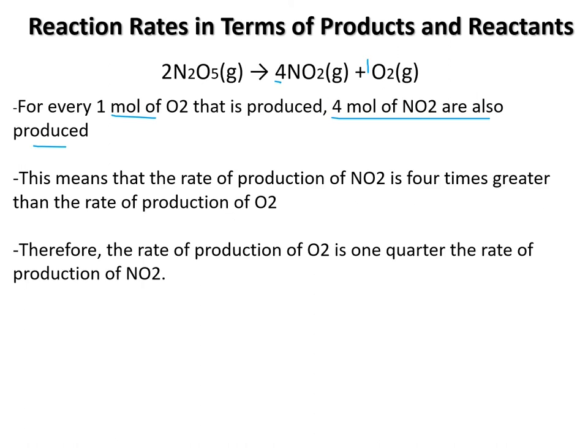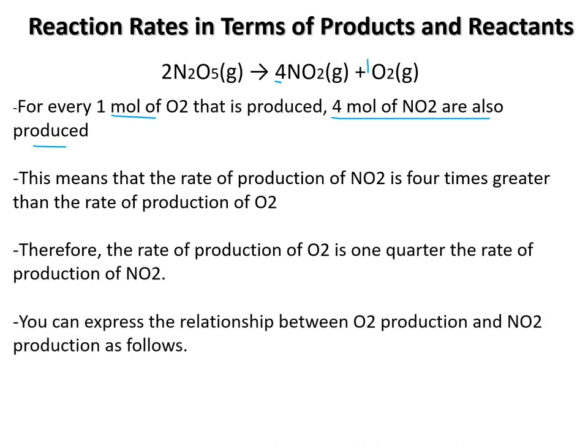Therefore, the rate of production of O2 is one quarter of the rate of production of NO2. So you can express this rate as the following. And if you wanted to express it the other way around, you'd of course have a different ratio. And don't forget that this is all positives in here, because we are producing something.